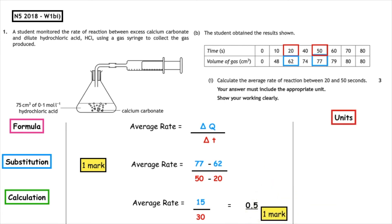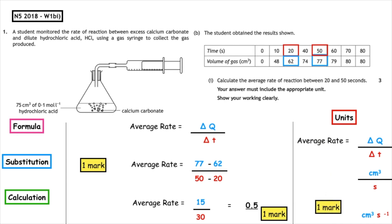The third mark is for the appropriate units. We write our average rate is equal to change in quantity over change in time. The quantity given in the question is centimetres cubed, and the time interval is seconds. So our unit would be centimetres cubed s to the minus one.